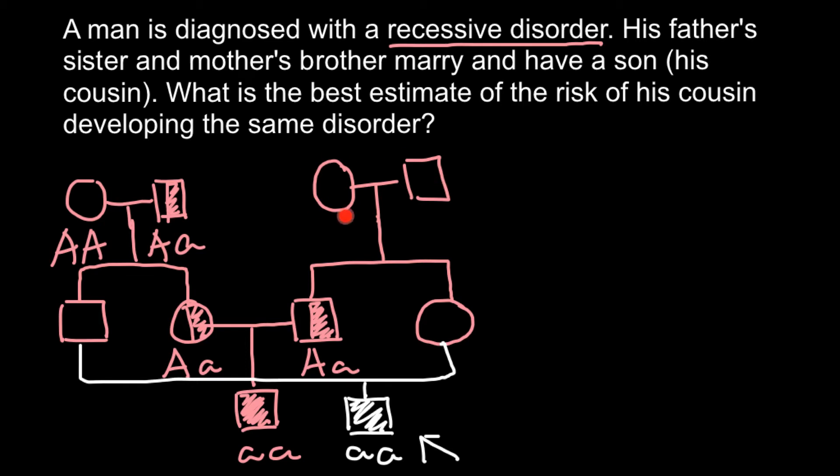The same is true for the father of our affected person. His father, because he is an obligate carrier, also had to get one recessive allele from one of his parents. Let's this time assume that his mother was a carrier, so genotype was capital A small a, and father was phenotypically and genotypically normal.